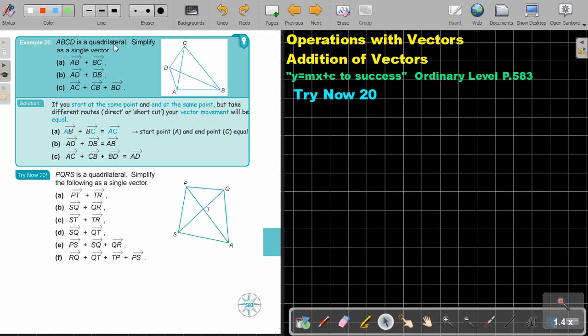Let's look at example 20. ABCD is a quadrilateral. Simplify as a single vector: AB plus BC.